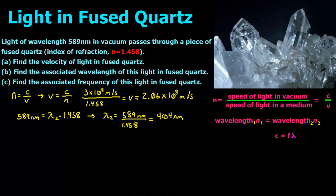So if you think about this, initially your wavelength kind of looks like this, and when it passes through the fused quartz, the wavelengths are going to get smaller — it's going to look more like this, a little bit smaller. For part C it says find the associated frequency of this light in fused quartz. Now this is where it gets a little bit tricky.